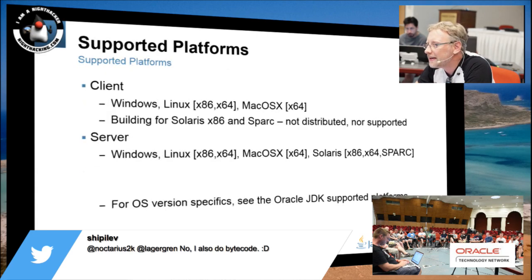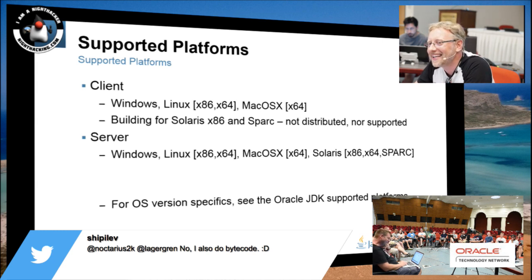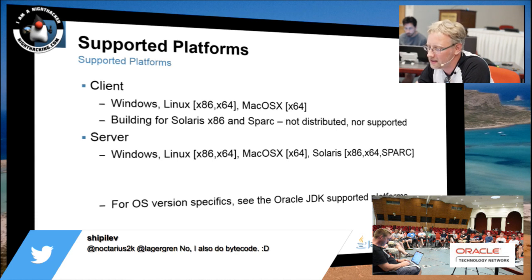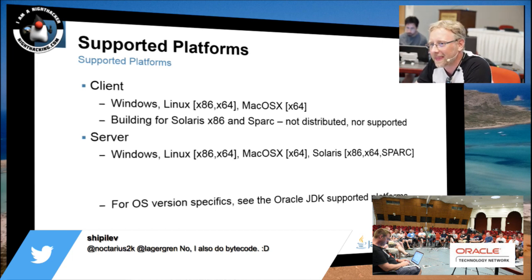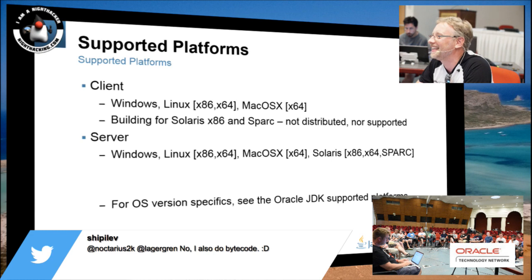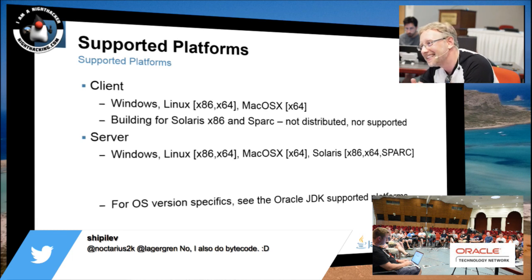These are the supported platforms. We are not building the client for Solaris because there aren't that many people running Solaris on the client, but we do support it for the server. You can even run it on ARM — so on Raspberry Pi, you can do flight recordings if you want, which is actually kind of fun. I built an autonomously running robot, and with a lot of sensor data and timing constraints, you can use the flight recorder to see what's going on in there.